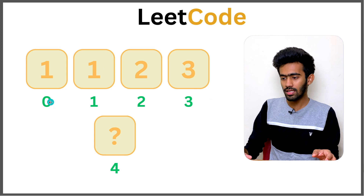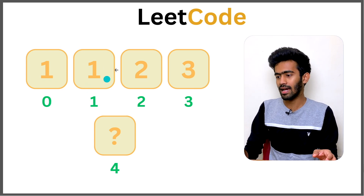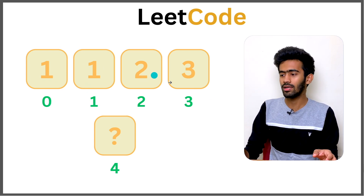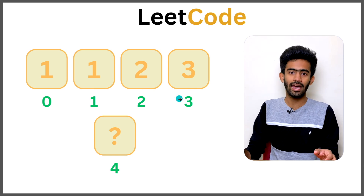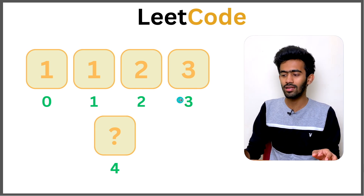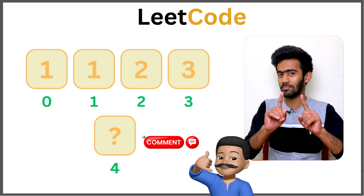We need to add numbers starting from the 0th index, 1st index, 2nd index, 3rd index, 4th index and so on — building up the array iteratively.